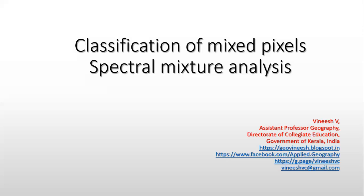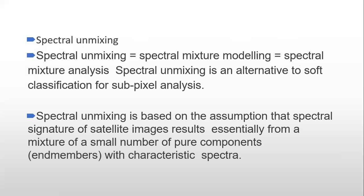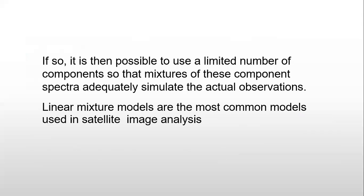So let us start the lesson. Classification of mixed pixels uses the method called spectral mixture analysis, also known as spectral unmixing. Spectral unmixing equals spectral mixture modeling and spectral mixture analysis. Spectral unmixing is an alternative to soft classification for sub-pixel analysis. It is based on the assumption that the spectral signature of satellite images results essentially from a mixture of a small number of pure components with characteristic spectra.